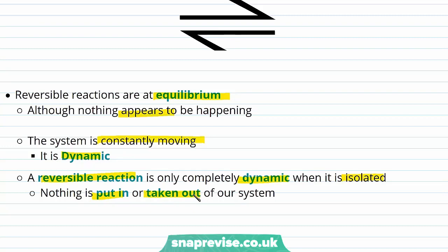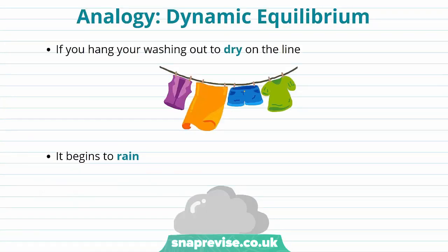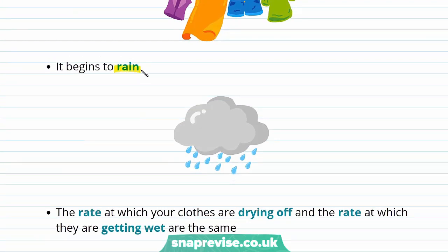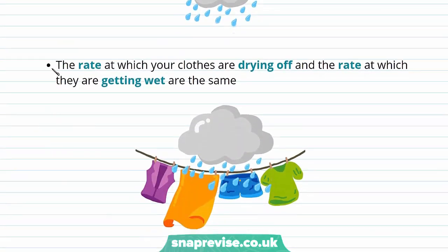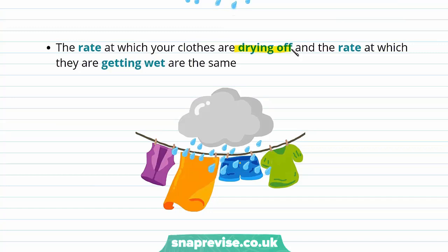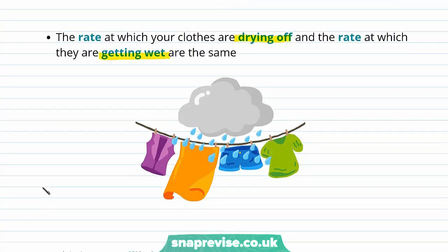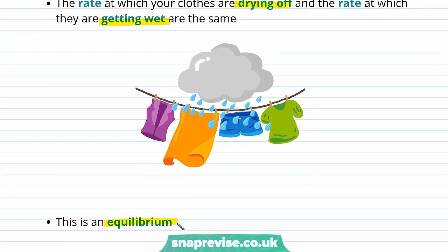Let's take a look at an analogy of dynamic equilibrium. If you hang your washing out to dry on the line and it begins to rain, the rate at which your clothes are drying and the rate at which they are getting wet are the same — this is an equilibrium. Although the system is constantly moving, the rate at which both are occurring is equal and overall nothing appears to be happening.